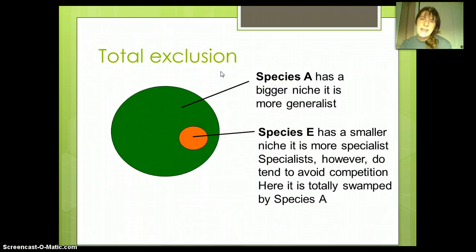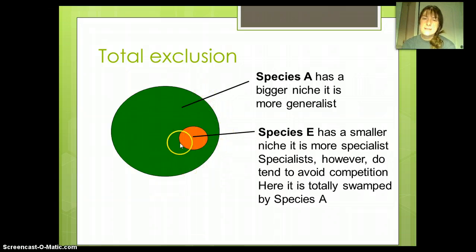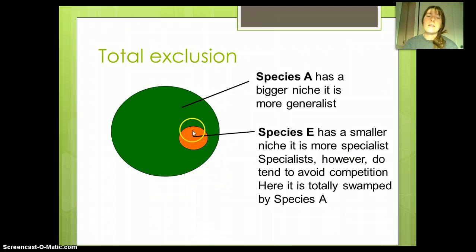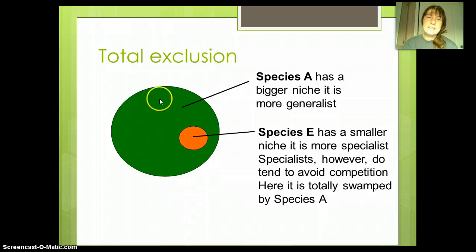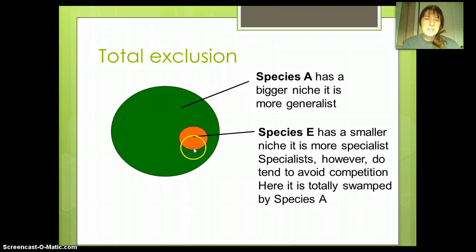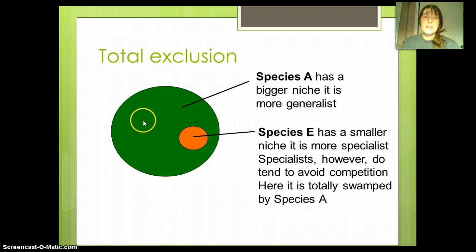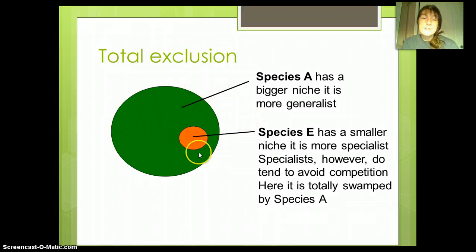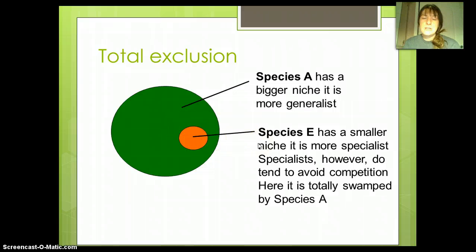Another thing that can happen is you can have one generalist and one specialist, and sometimes they're able to avoid competition by being very direct. This type of diagram would be a challenge for species E because they're a specialist — able to live in a smaller area — where species A has a larger niche and is able to fill a lot more roles in the ecosystem. However, if these are still different enough, then both species could exist.